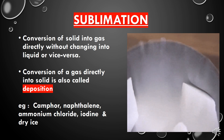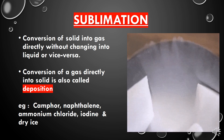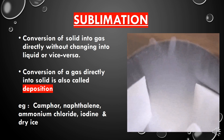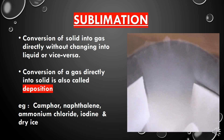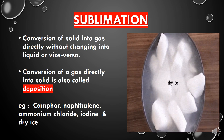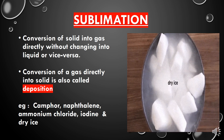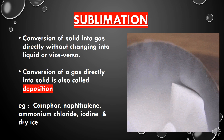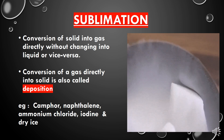Dry ice, as you can see in the picture, is solid carbon dioxide. It directly converts into gaseous form from its solid form. Dry ice is used where we cannot use normal ice — specifically when we need to keep things dry, since normal ice when it melts wets the surrounding substance.